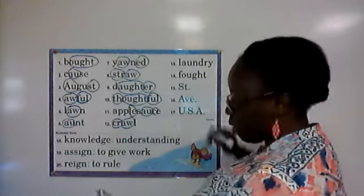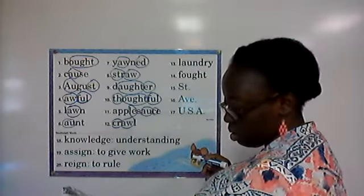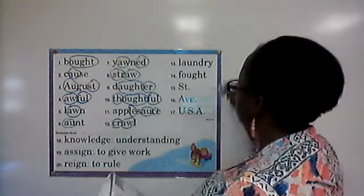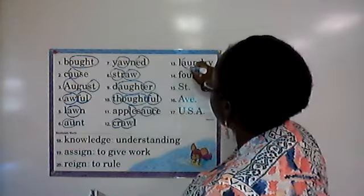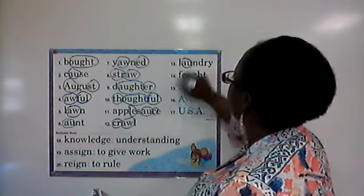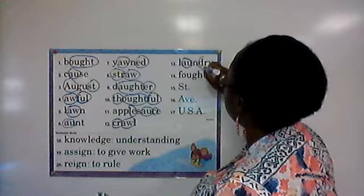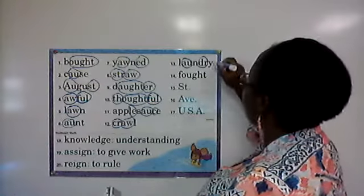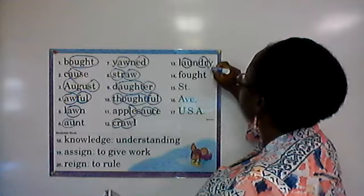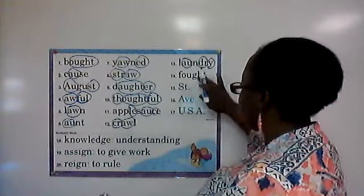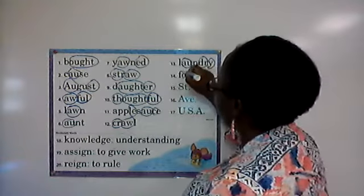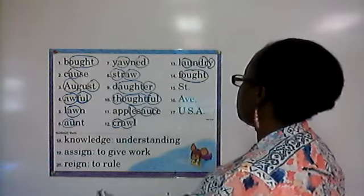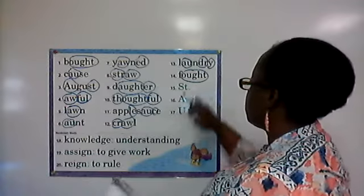In the word laundry, we have 'au' as in faucet: A-U, and 'dr' as in drown: D-R, and 'y' as in baby. In the word thought, we have 'ought' as in thought: O-U-G-H-T once again.